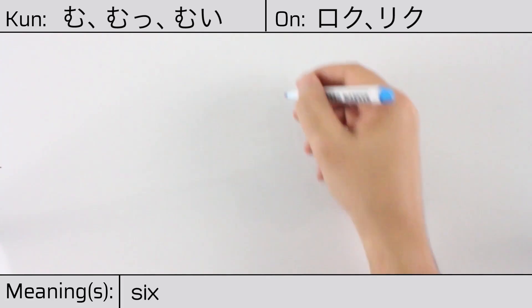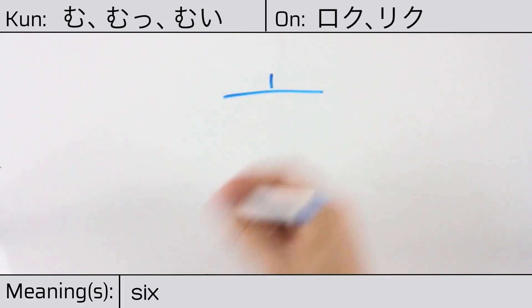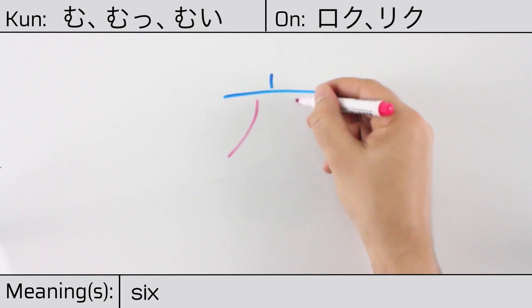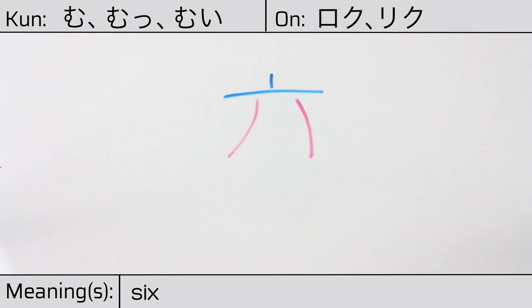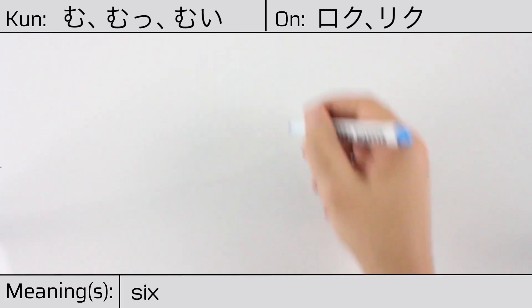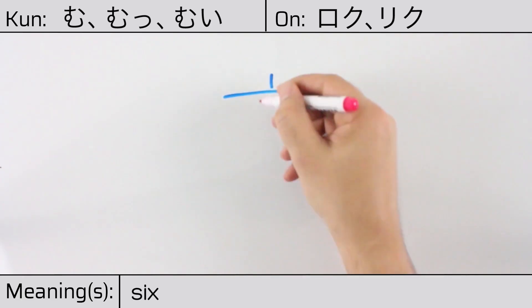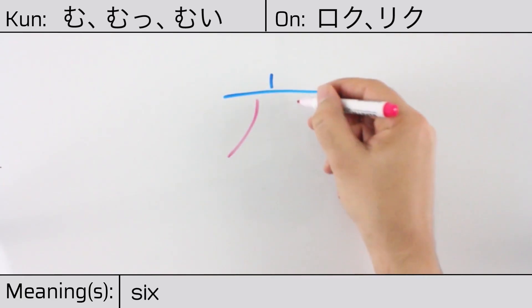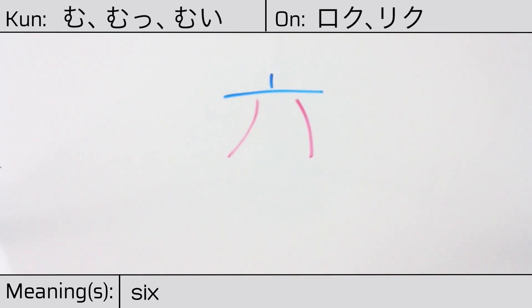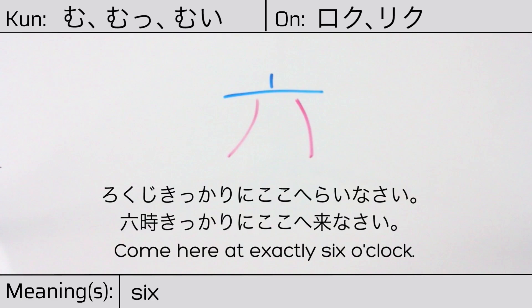This character is made up of the following radicals or parts: the lid or top radical, nabebuta, and the number eight. You can remember this kanji by thinking of it as looking like a six-year-old child. Our example sentence is: Roku shi kikkari ni koko he rai nasai — Come here at exactly six o'clock.